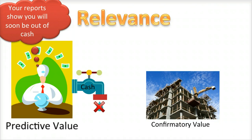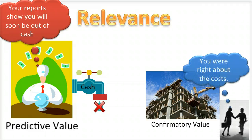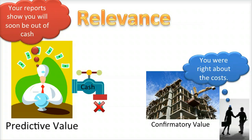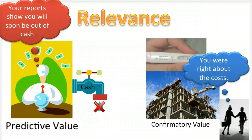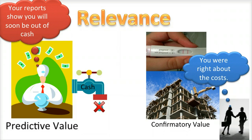On the other hand, financial information indicating that an entity's prior estimates of an amount — such as the cost to complete a long-term contract — were accurate or inaccurate, would be said to have confirmatory value, because it helps to confirm or reject financial information previously provided. A pregnancy test kit is a non-financial example of something that has confirmatory value.